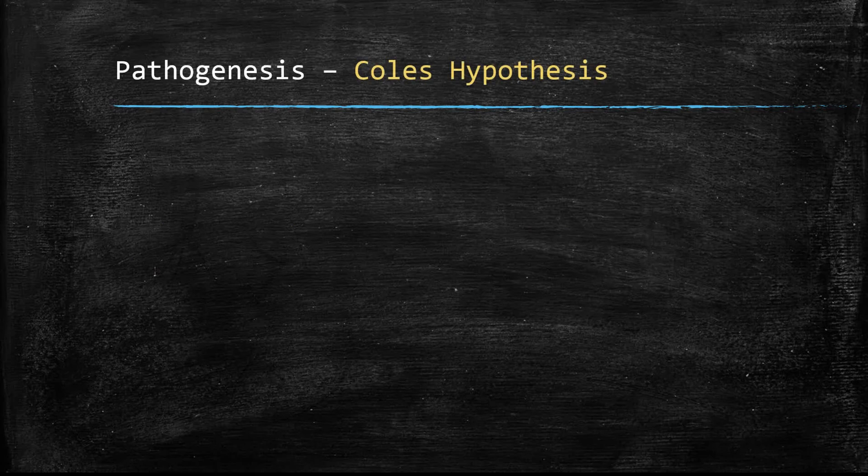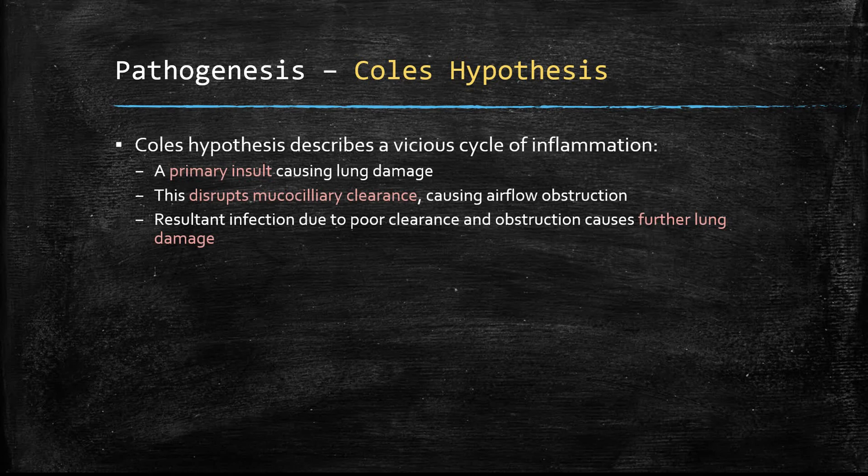Cole's hypothesis puts it in a very nice way. Initially, you have an insult causing lung damage — this can be anything, for example, pneumonia can cause lung damage. This disrupts mucociliary clearance, causing airflow obstruction. The mucus is not moving, and this results in infection developing and inflammation, which causes further lung damage. And it's a vicious cycle.